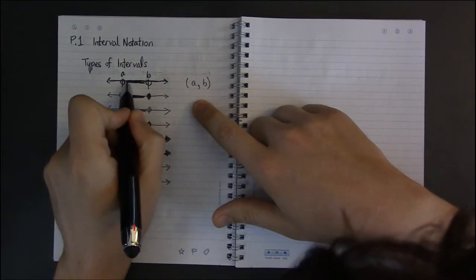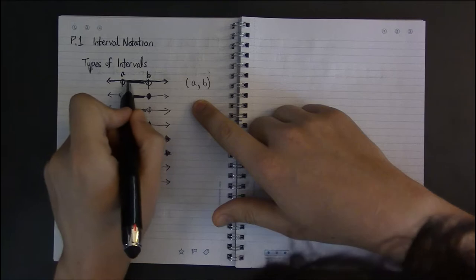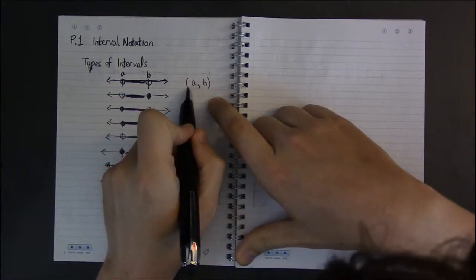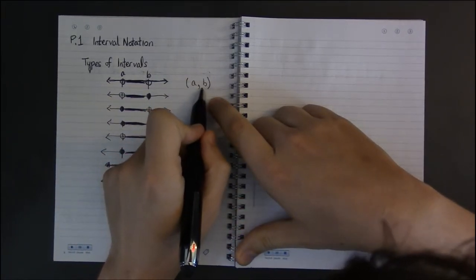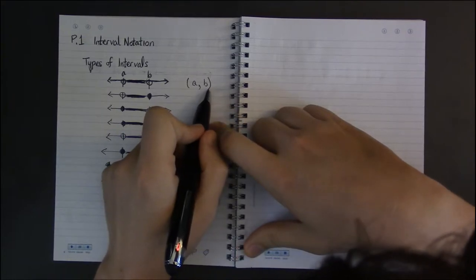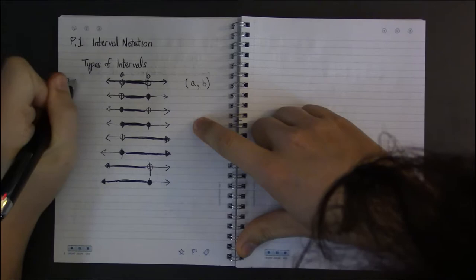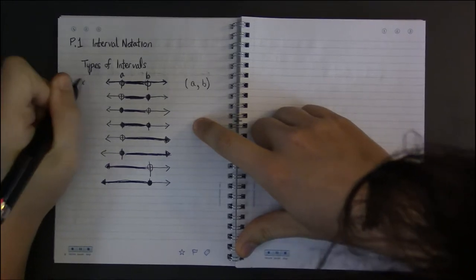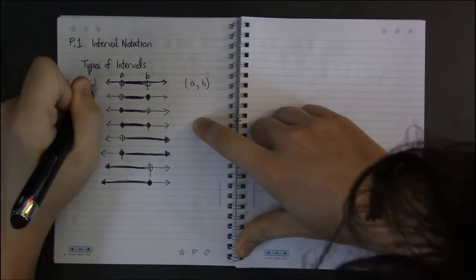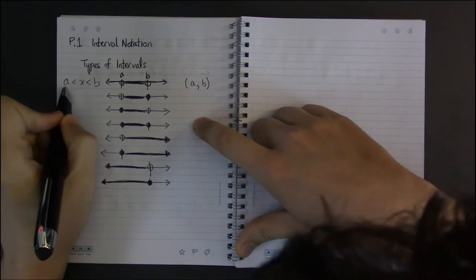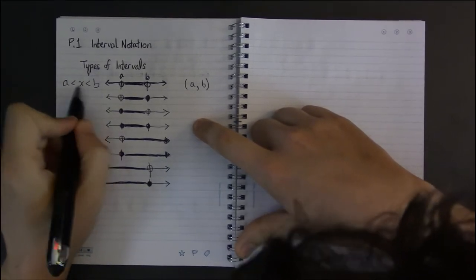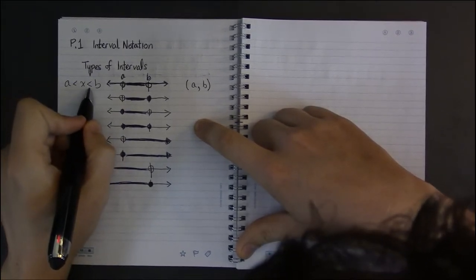The way we usually write this is just that some variable is between a and b: a less than x less than b. So really, interval notation is an extra notation. We already have a way of representing this; this is just merely an additional way.